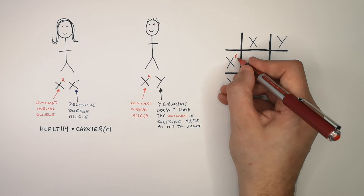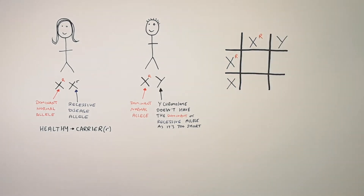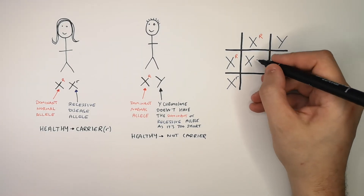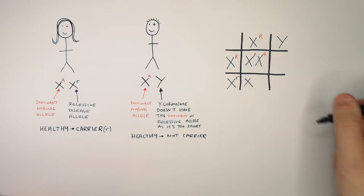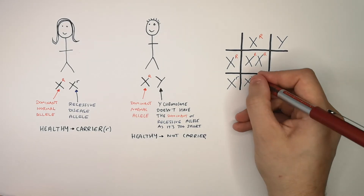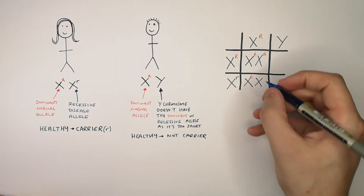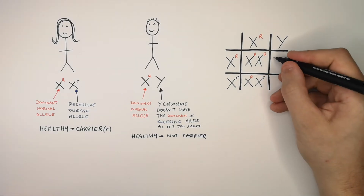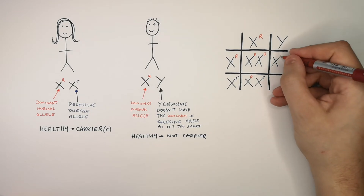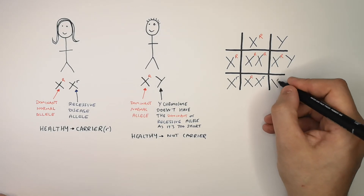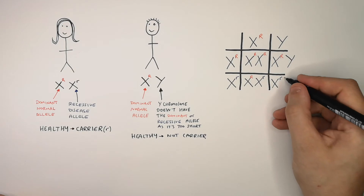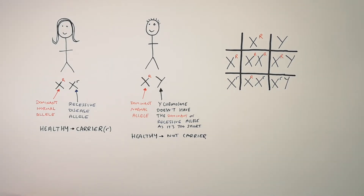Both parents carry the normal dominant allele, big R, whereas the woman also carries the recessive disease allele on her other X chromosome. The children can be XX (a girl) inheriting the dominant allele from both mum and dad, or XX inheriting the dominant allele from dad and the recessive disease allele from mum. The boys can inherit the big R dominant allele from mum and the Y from dad, or the small r recessive allele from mum and the Y chromosome from dad — meaning that last boy will have the disease.